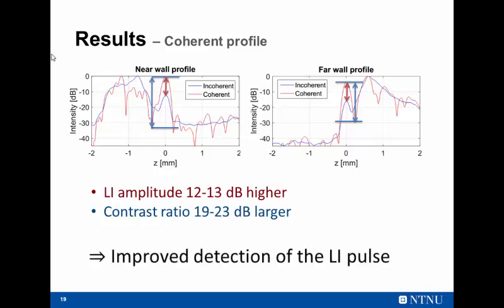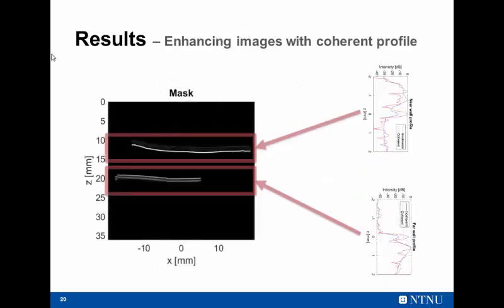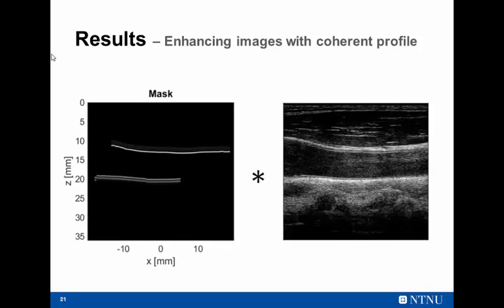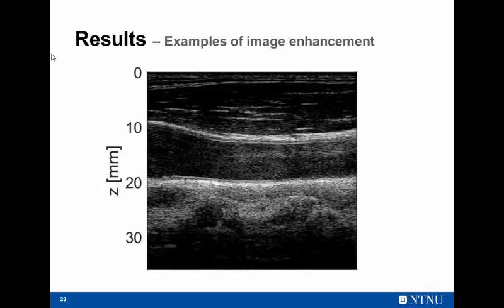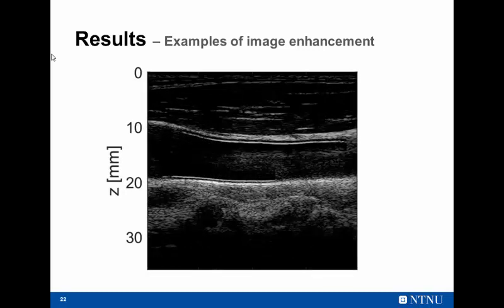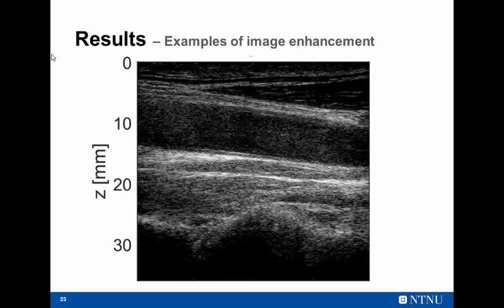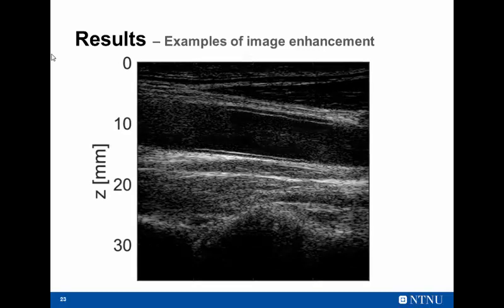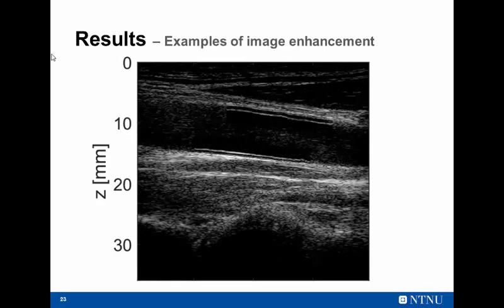So I can conclude that by using these coherent profiles, we can improve the detection of the lumen-intima pulse and the segmentation of the carotid wall. So just to simplify how this can be applied to improve the image, you can just use the estimation and the coherent profiles to create a mask, and then you can apply it to the image, the original image. And here present just a few results. This is the original image, and now improved with these coherent profiles. Second one, and now improved with the coherent profile.